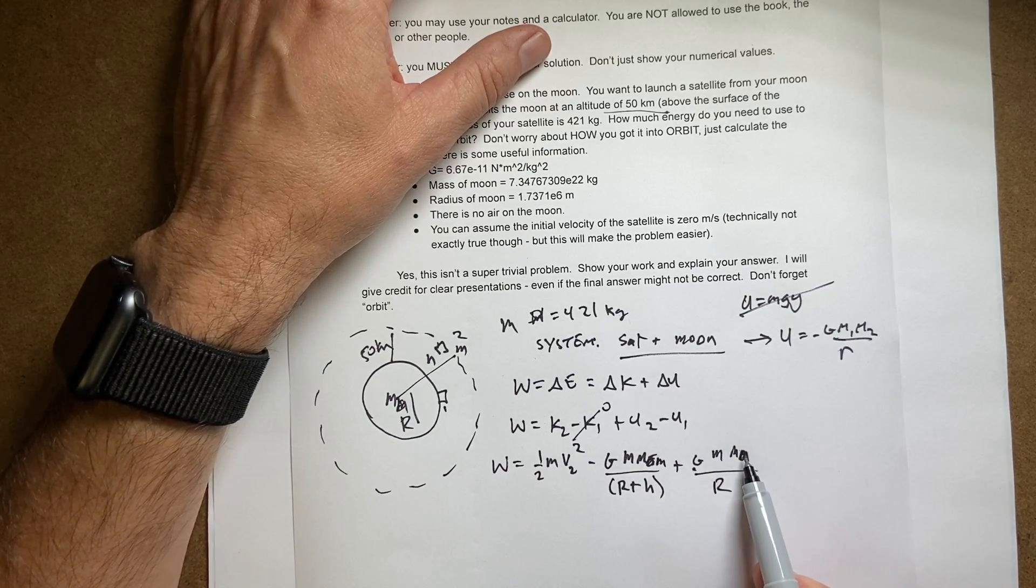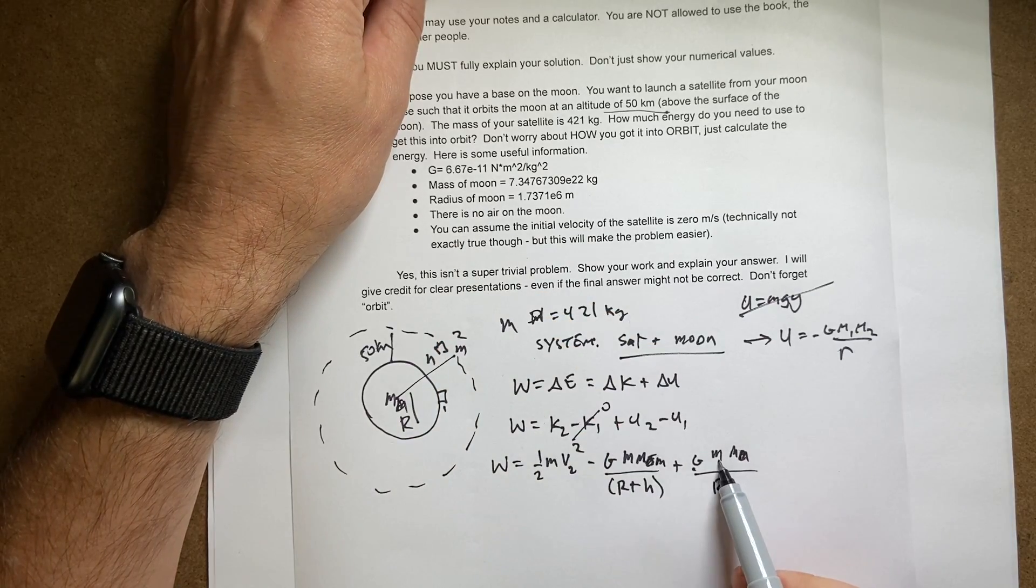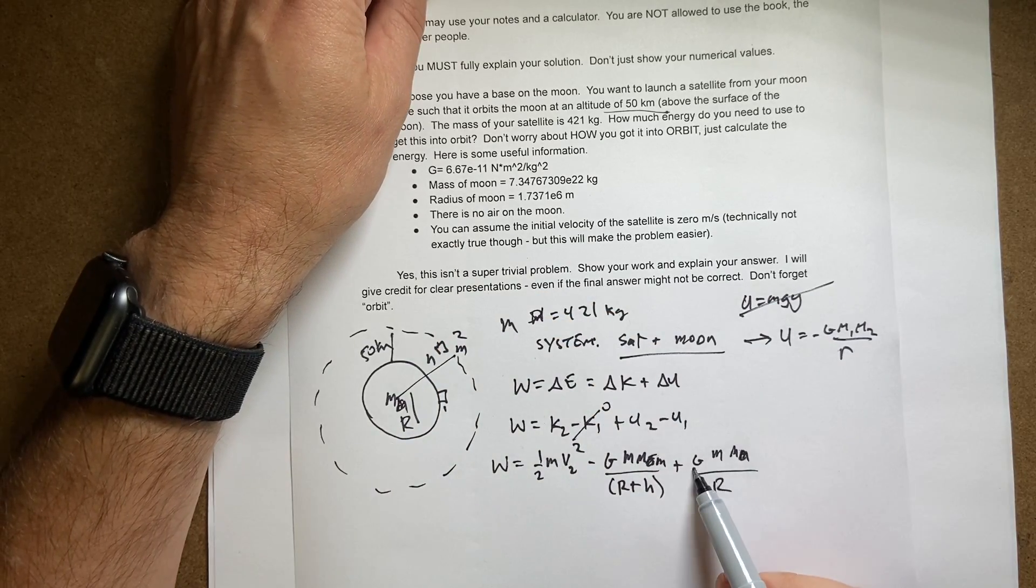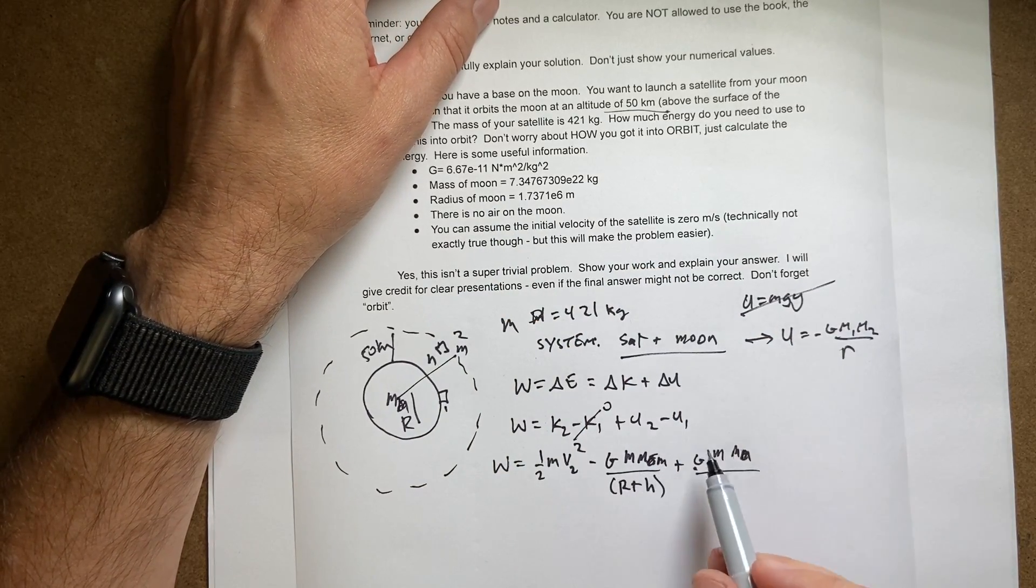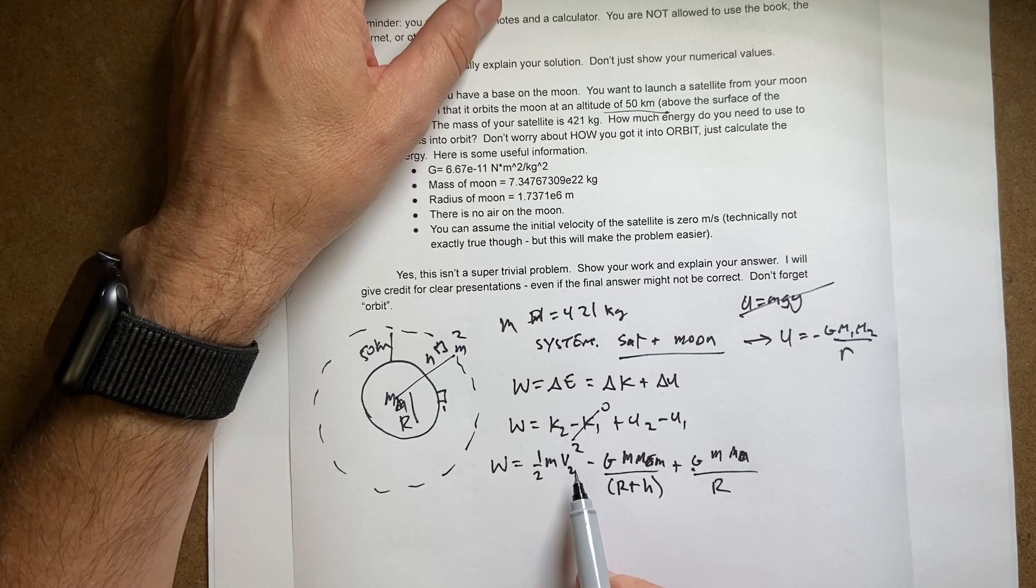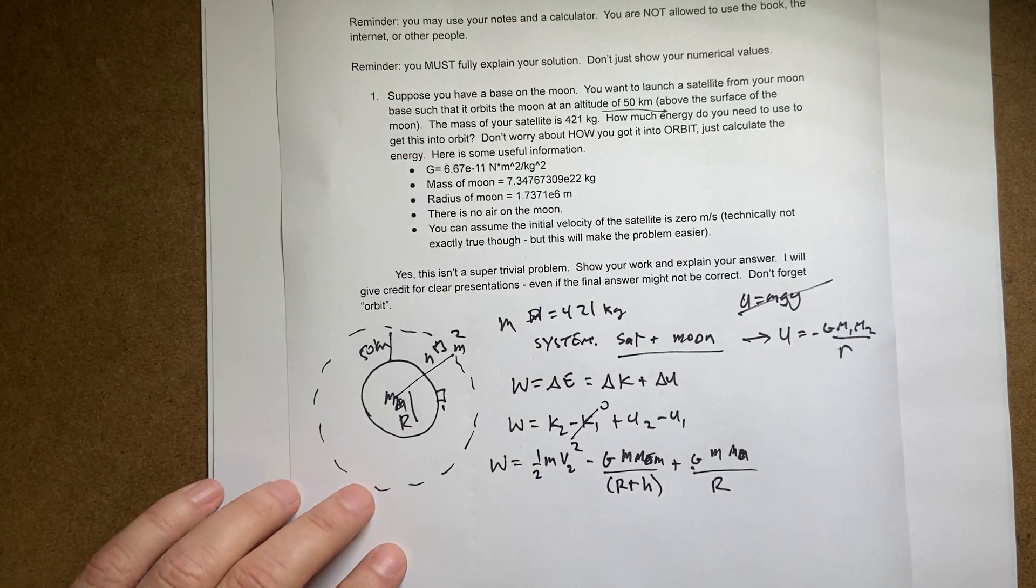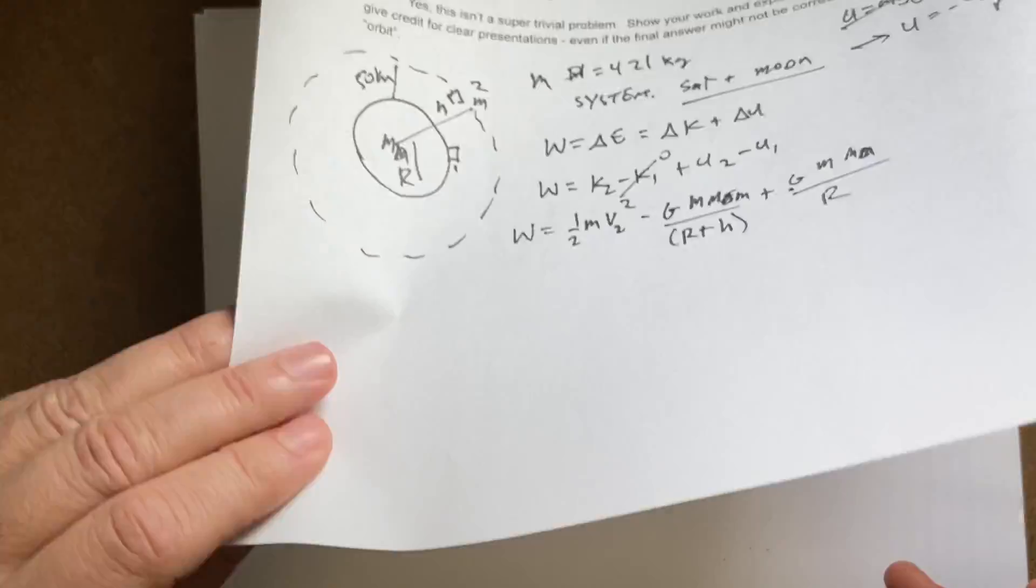So I know the mass of the moon. I know the mass of the satellite. I know g. I already gave that to you. I know r. I know h. So I know everything right here, but I don't know v2. I do not know v2. So I actually have to find v2.